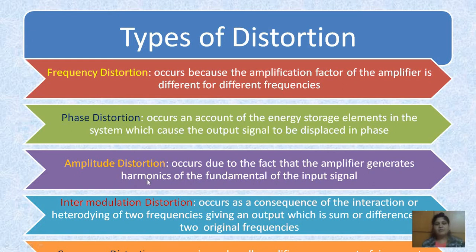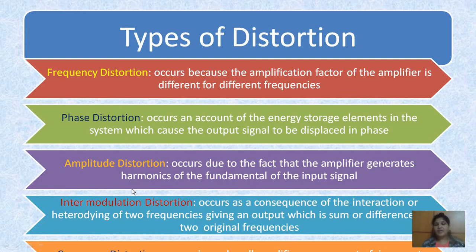The third one is amplitude distortion, where the amplifier generates harmonics of the fundamental input signal. The fourth is intermodulation distortion — when mixing two frequencies (heterodyne), the output is the sum or difference of the two original frequencies, and any disturbance in this is called intermodulation distortion. The last one is crossover distortion, caused by incorrect bias levels in a push-pull amplifier.